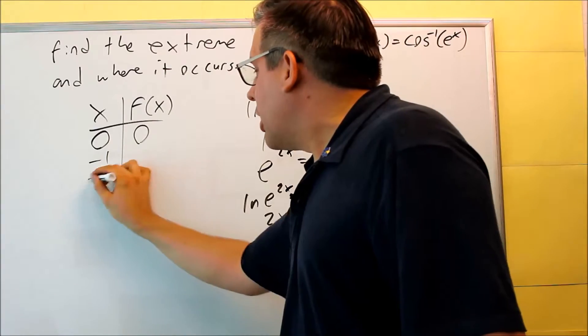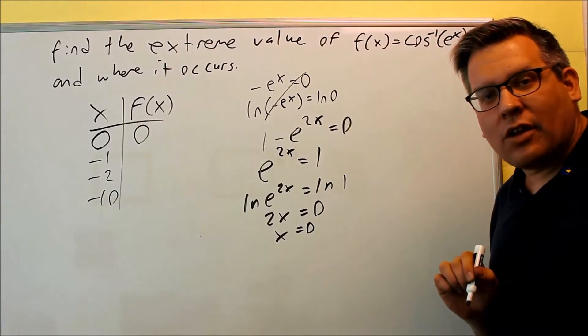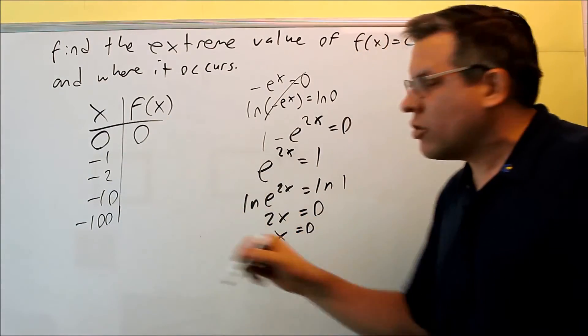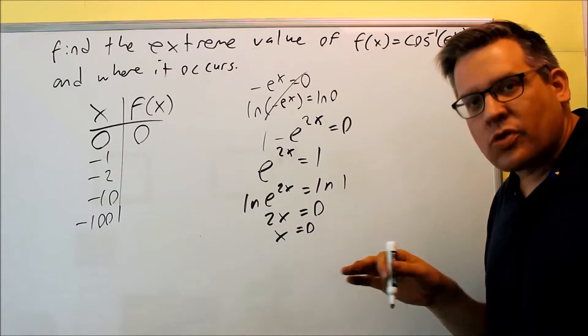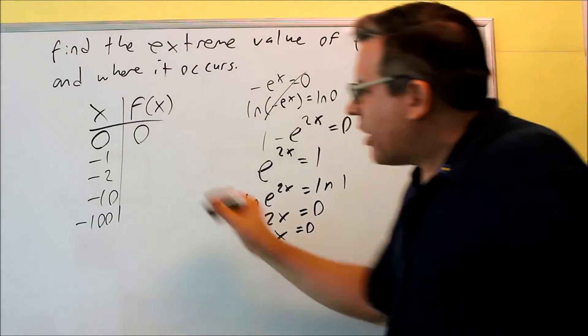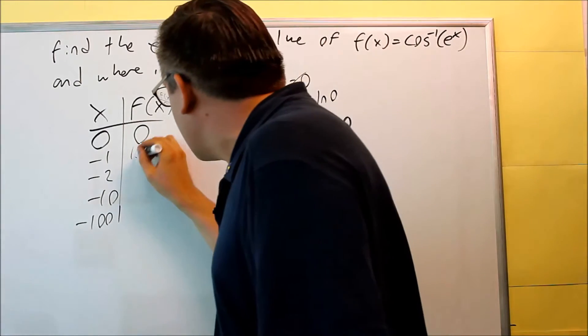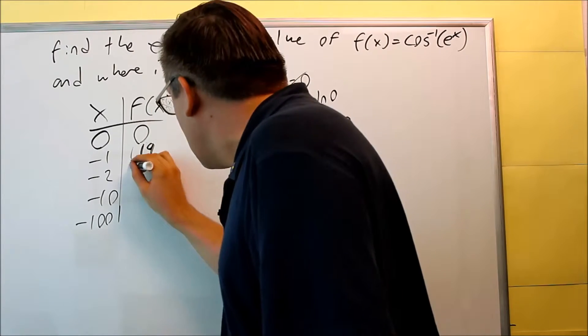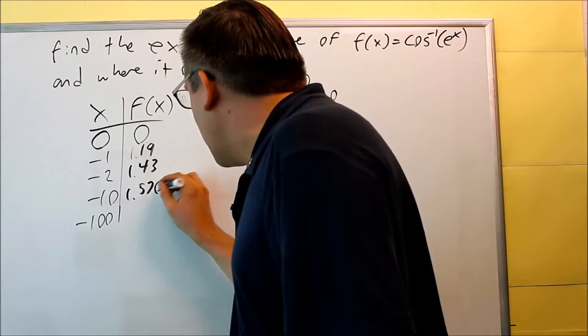But what I want to do is try some other points that are less than 0. So maybe I'll try negative 1, negative 2, negative 10. I want to try some other numbers to see what's actually happening. Now these are arbitrary values. You can pick any values you want, but I'm just going to try some larger numbers to see if I get any kind of asymptotes or something like that happening, because that's going to tell me if it's going to have an absolute max or not. So if I put these numbers in, if I do negative 1, 1.19. And then if you do negative 2, 1.43. Negative 10 is going to be 1.5708.